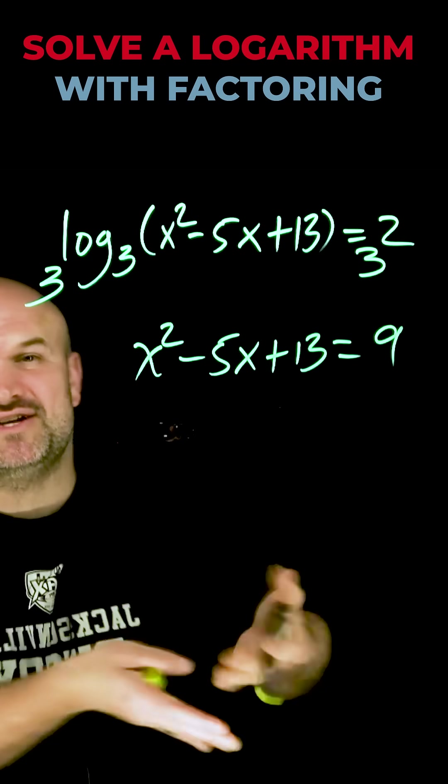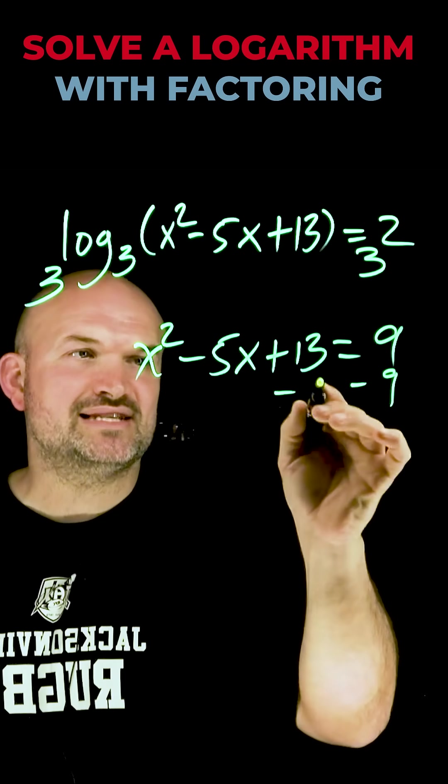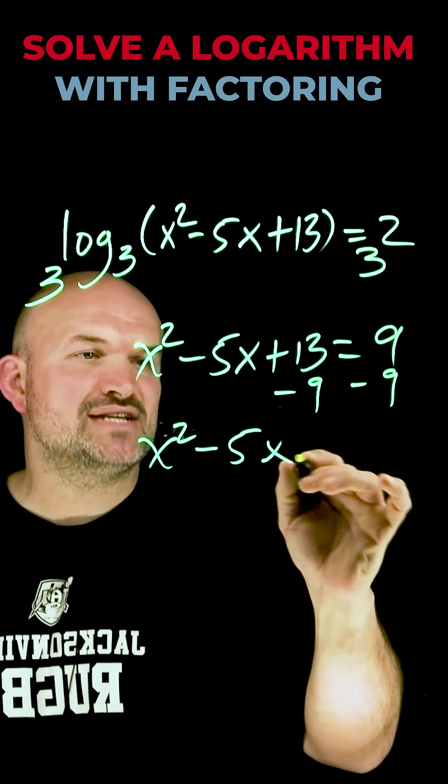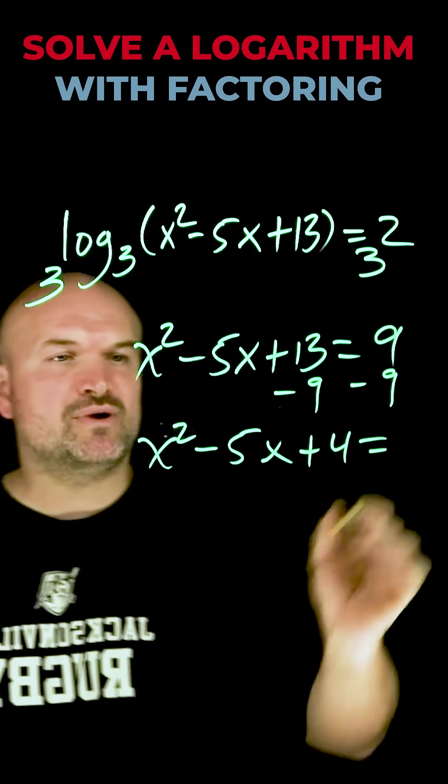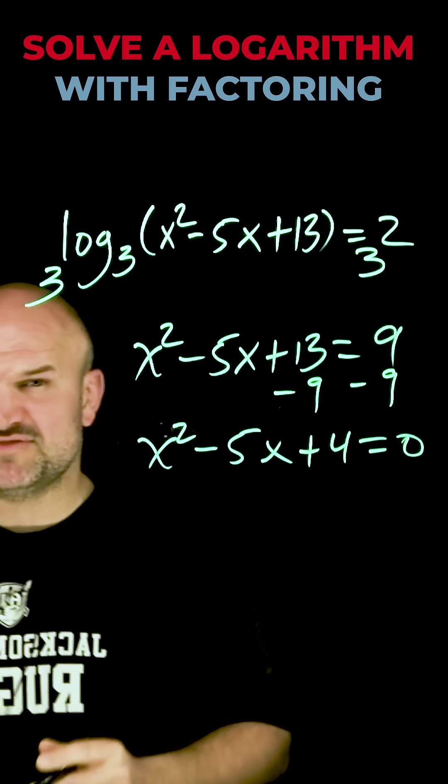Now we know we have a quadratic equation. To solve that, we need to make sure we set it equal to 0. So by subtracting 9 on both sides, I'm now going to have x squared minus 5x plus 4 equals 0.